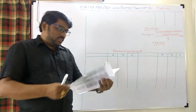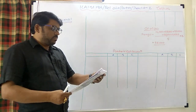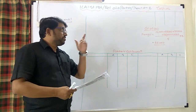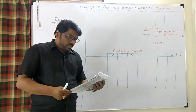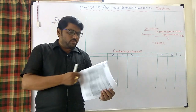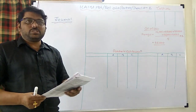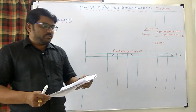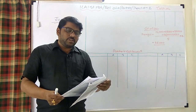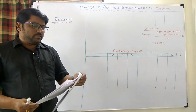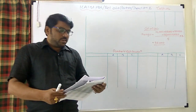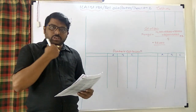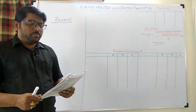Today we are going to discuss practical question number two from ICAI study material on retirement of a partner. ABC are partners sharing profits and losses in 3:2:1. The balance sheet of the firm is given on 31st March 2016. On the date of retirement, A is retiring while B and C will continue.